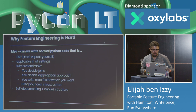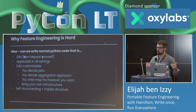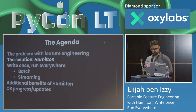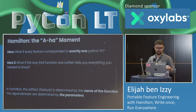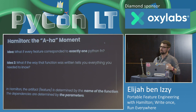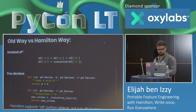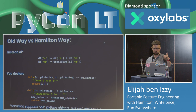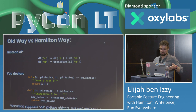The solution we came up with is Hamilton. As a spoiler, if you've seen PyTest fixtures, it's kind of like taking that idea to an extreme and adding some type safety. The idea was: what if every feature corresponded to exactly one Python function, and what if the way that function was written told you everything you needed to know about the feature? In Hamilton, the artifact is determined by the name of the function, and the dependencies are determined by the parameters. So c is a function of a and b, d is a function of c, and so on.